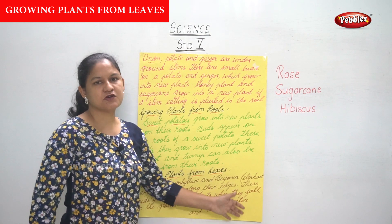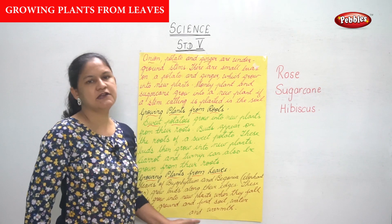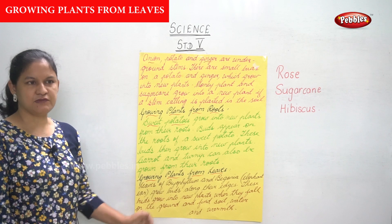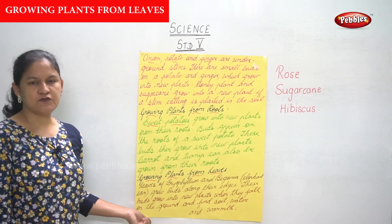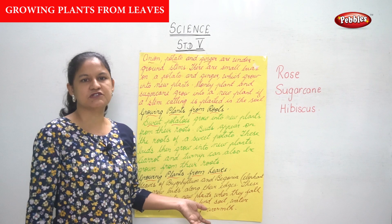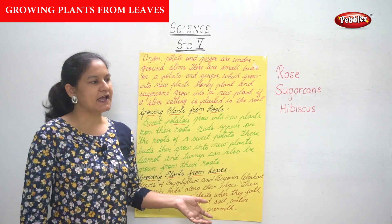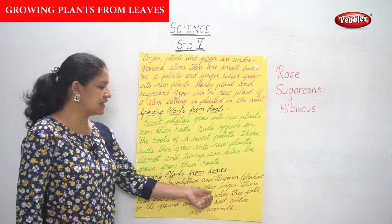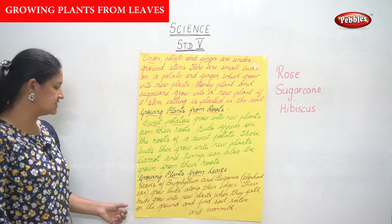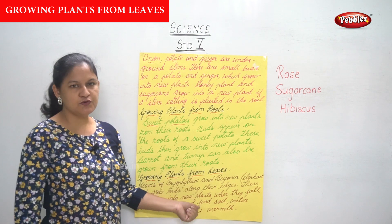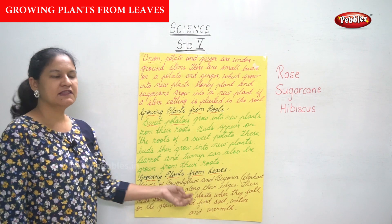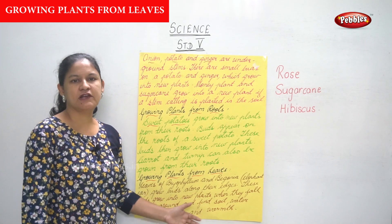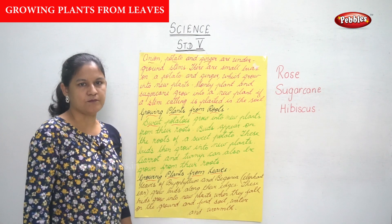Talking about growing plants from leaves, the leaves of bryophyllum and begonia, also known as the elephant ear, grow buds along their edges. These buds grow into new plants when they fall on the ground and find soil, water, and warmth.